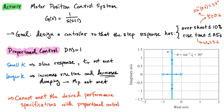Before we jump into using the rltool, it's useful to stop and calculate out the geometries we're expecting. If we go through the calculation for an overshoot value of 10%, that corresponds to a zeta value greater than 0.6. Taking the inverse sine of 0.6 gives us an angle of about 37 degrees. So the closed loop poles that achieve an overshoot of less than 10% are ones that have an angle greater than 37 degrees.